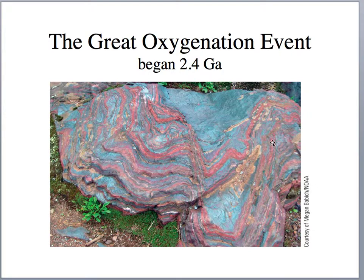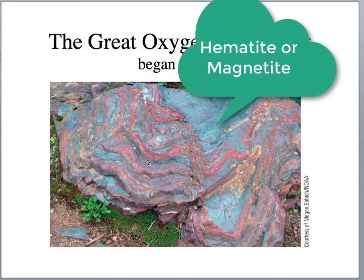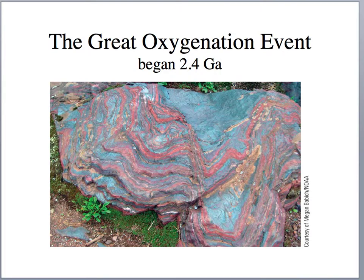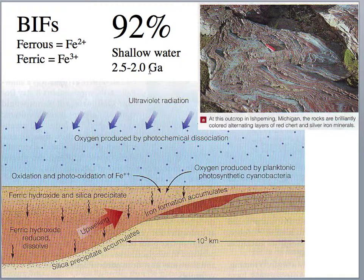Here's an example of one of those banded iron formations. They began about 2.3 to 2.4 billion years ago. They're a combination of red jasper chert — which is silica, a sedimentary rock of primarily microcrystalline quartz — and then this silvery-gray material is hematite or magnetite, which is the iron. These banded iron formations are very abundant, primarily in the Proterozoic. In fact, 92% of banded iron formations formed between 2.5 to 2 billion years ago, in the Paleo-Proterozoic.